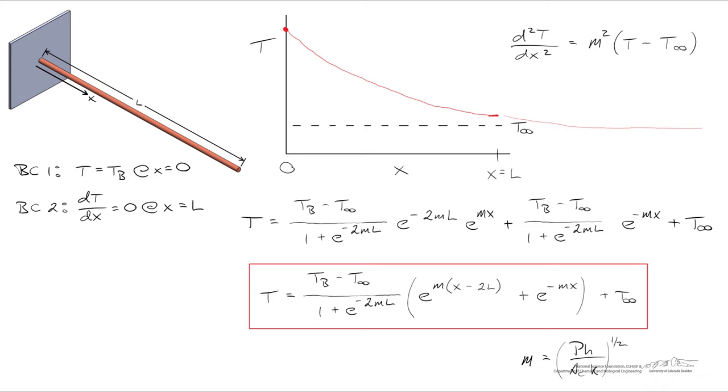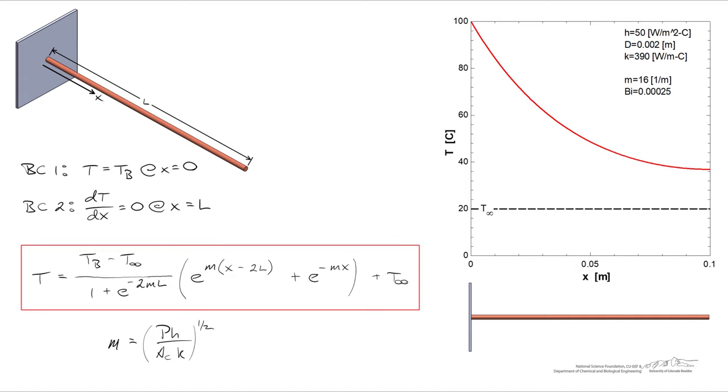Alright, well let's use this expression. Here I just graphed an example using this expression, and I chose parameters, a heat transfer coefficient of 50 watts per square meter per Kelvin, that's like a gentle breeze over a fin with a diameter of 2 millimeters.